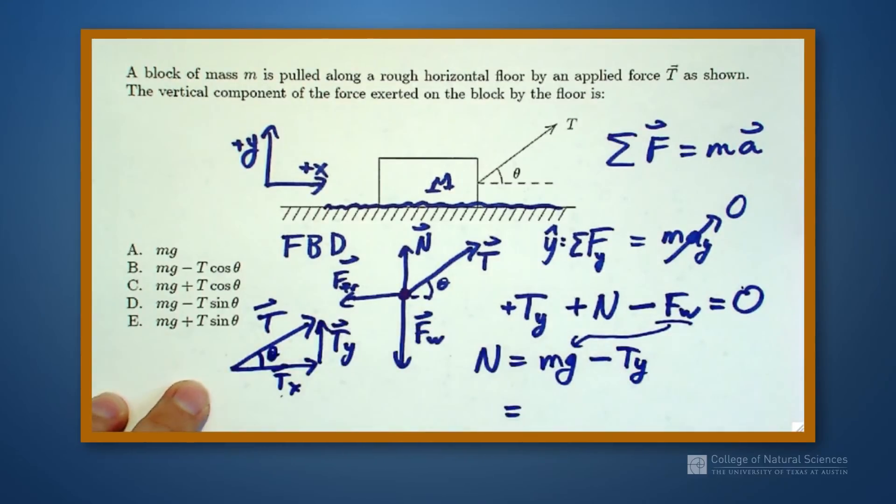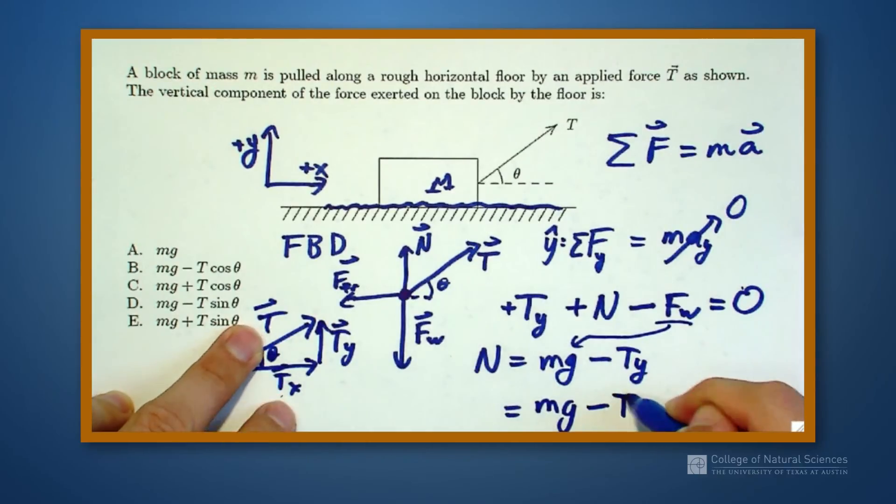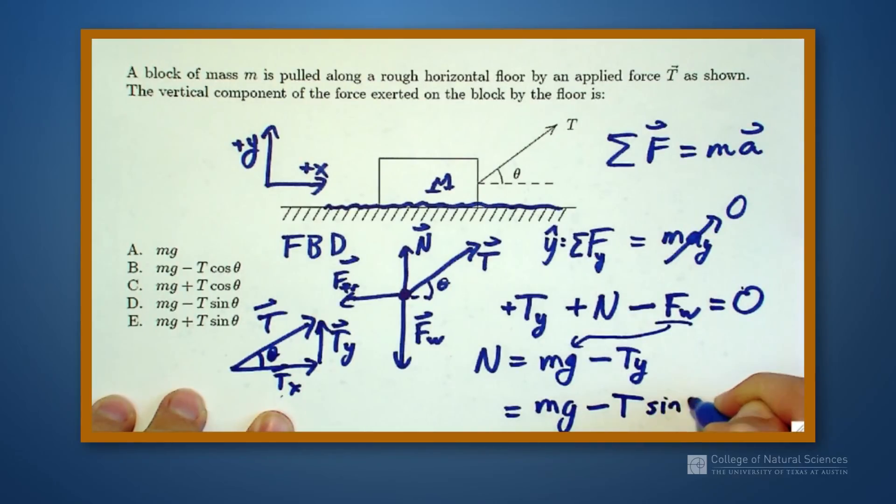So if that's my angle theta, I look at y is my opposite over my hypotenuse, so I get my weight force again, minus T, my tension force, the actual value of my tension, times the sine of the angle.